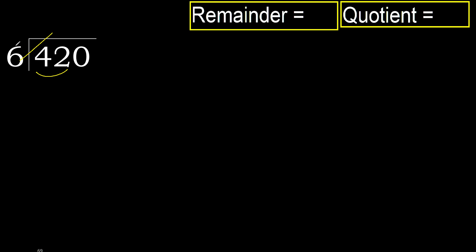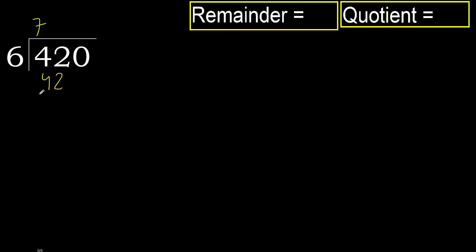But not greater. 6 multiplied by 8 is greater. Multiply by 7. 42 is not greater. 42 minus 42 equals 0.